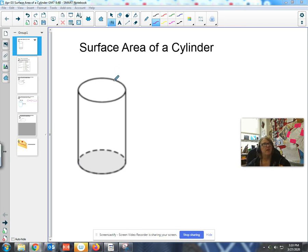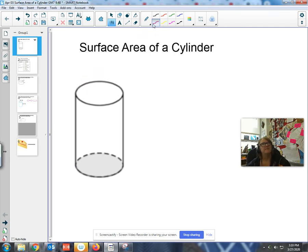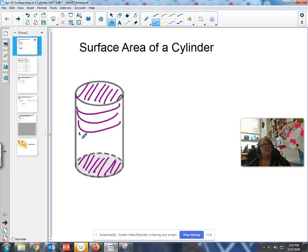We have to cover the top, which is a circle. We're going to have to cover the bottom, which is the same size circle. And then we have to go around the side. So you have a circle on the top, that's the top base. You have a circle on the bottom, that's the bottom base. So you have two bases.